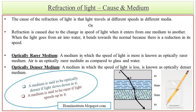The medium that obstructs less — resists less — for the light ray to cross through it is called a rarer medium. And the medium that obstructs more, causing more barrier for the light ray to cross through it, is called a denser medium. So we have optically rarer medium and optically denser medium.